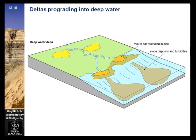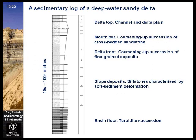Deltas prograding into deep water produce delta deposits, slope deposits, and turbidites. A sedimentary log of a deep-water sandy delta shows turbidites transitioning to slope deposits, coarser delta front and mouth bar deposits, and into delta top deposits. Both mouth bar and delta front show a coarsening-upward succession of fine-grained deposits.